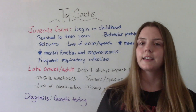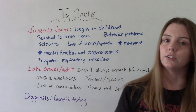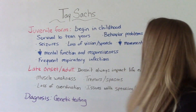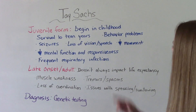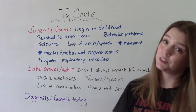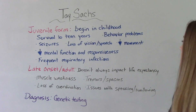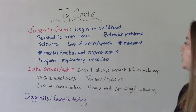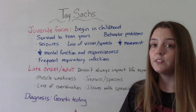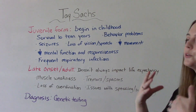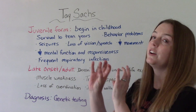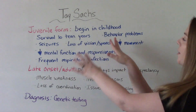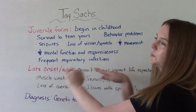The second form, which is less common, is the juvenile form. This begins during childhood and these patients have a longer life expectancy — they can survive even into the teenage years. Symptoms include behavioral problems, seizures, loss of vision and speech, decreased control over body movements, a decline in mental functioning, eventually a decline in overall responsiveness, and then frequent respiratory infections. You can see how some of these symptoms are similar to the infantile form, with decreased motor functioning, unresponsiveness, and eventually respiratory infections occurring.